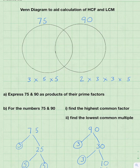And then the factors that are common to both are 3 and 5. So we can write 3 and 5 in the intersection, which for 75 just leaves 5, and for 90 leaves 2 and 3.